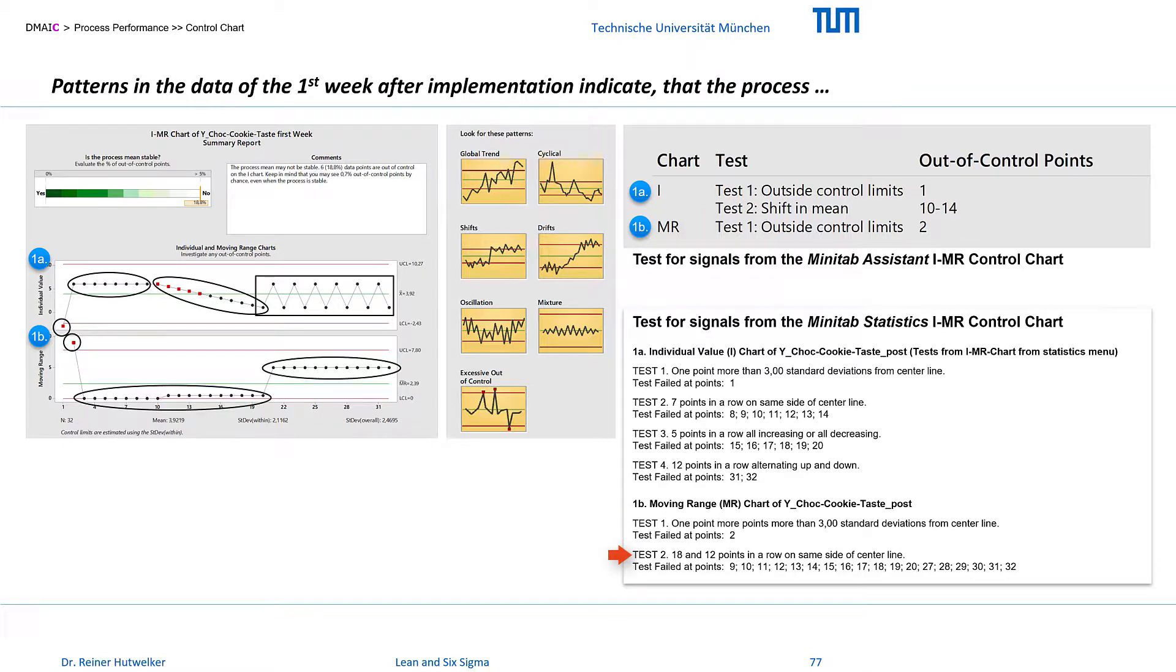Test 2 points on 18 and 12 points in a row on the same side of the center line. This means that in the first period the difference between all adjacent values was relatively small and that the differences between adjacent values in the second period was relatively big. The causes for this are the continuous bad cookies in the first period and the ping-pong with big differences between adjacent values in the second period.